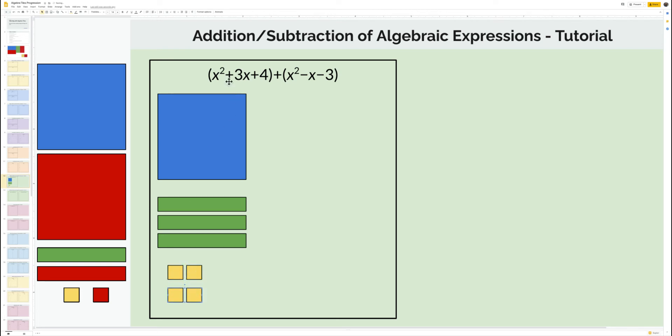We're going to take this quantity, x squared plus 3x plus 4, plus the quantity x squared minus x minus 3.